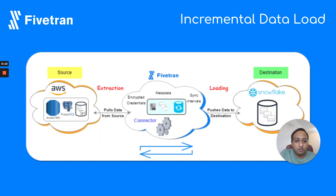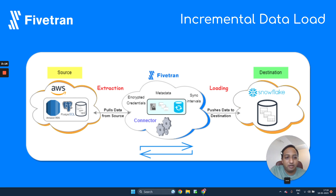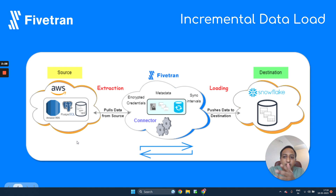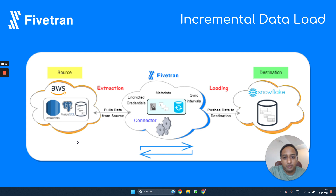This is a representation of how Fivetran appears in an organization. We have a source database and a destination database or data warehouse. In our case, let's say the source is on AWS RDS, and we want it synced with our data warehouse, which is Snowflake.